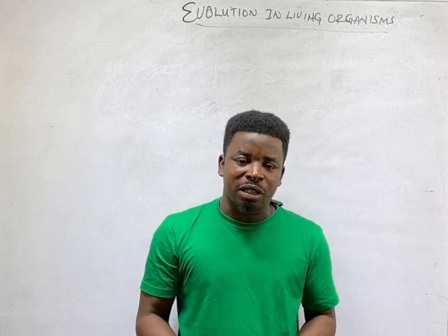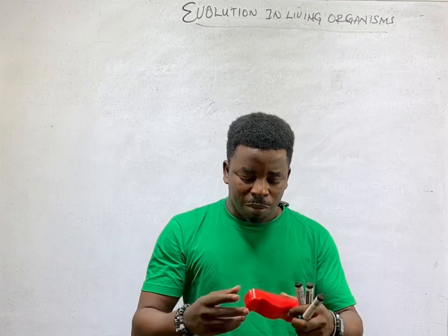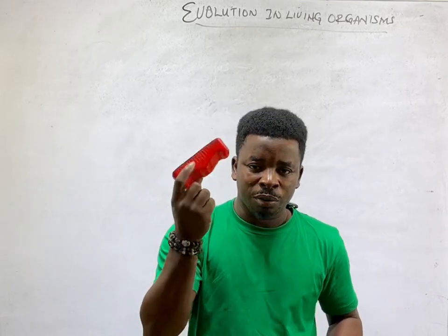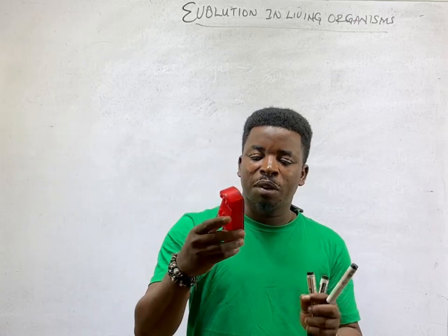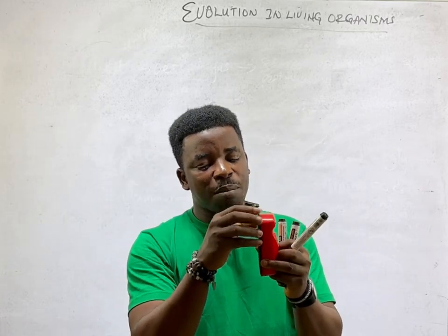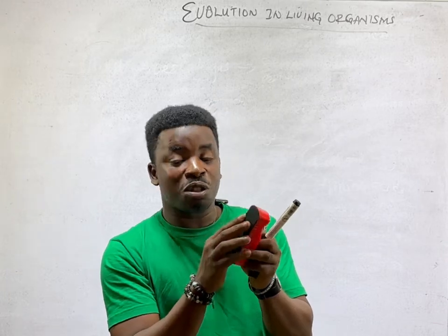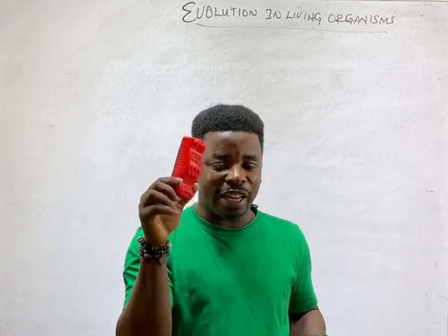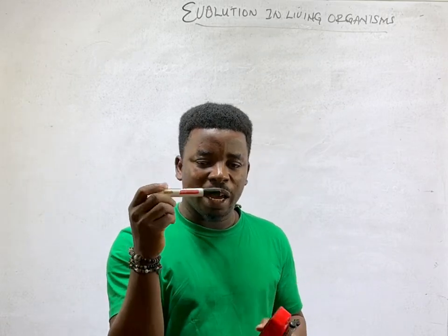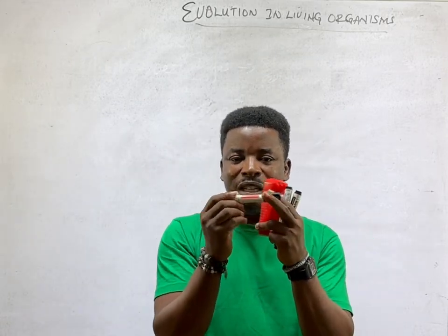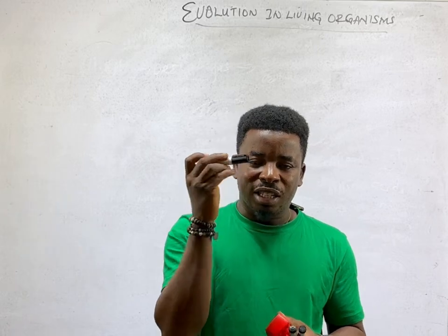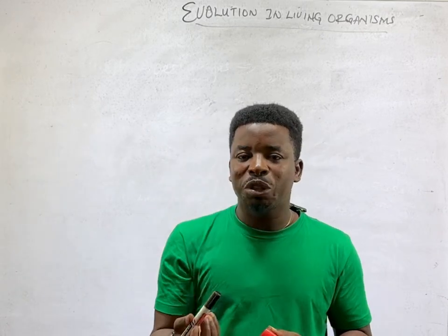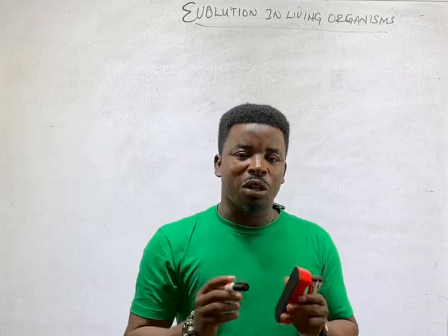What do we mean by this? It means that over time, something changes. Let's take this for an example — this is a duster. Over time, if I keep using this duster and I try making subtle changes to it, it's bound to become a different thing. This marker here also, if over time I start making some adjustments to it, it gets some utility changes and then it becomes a new species. And that is what we are talking about in evolution.